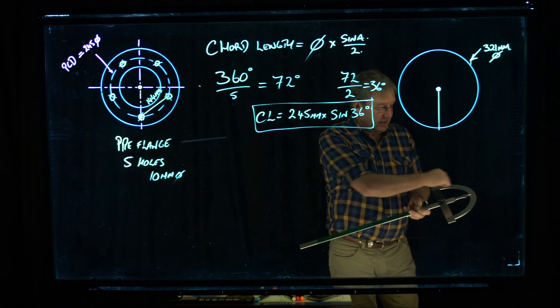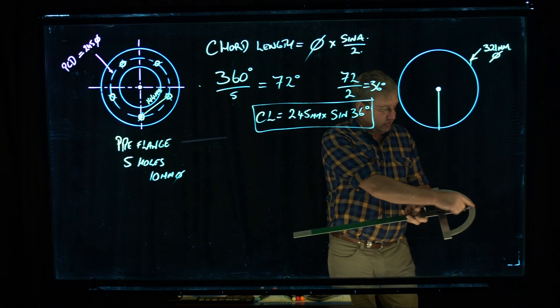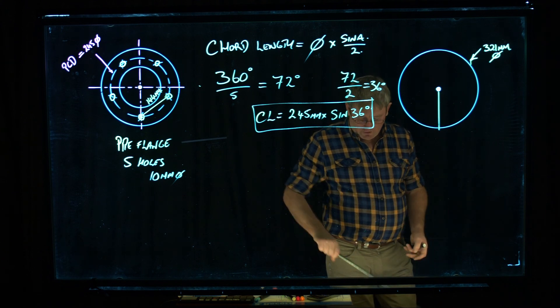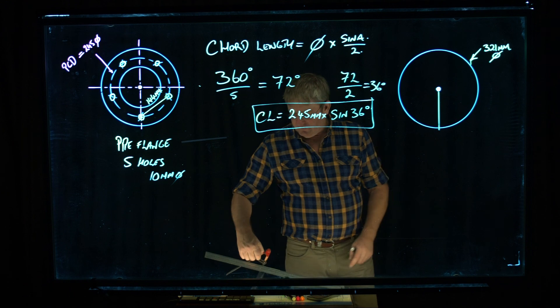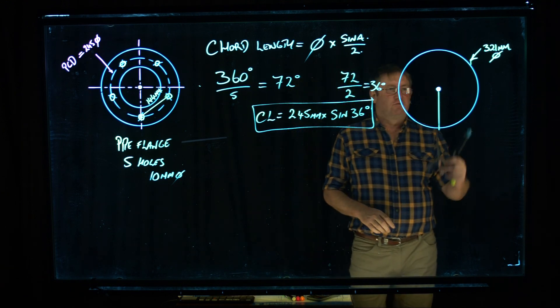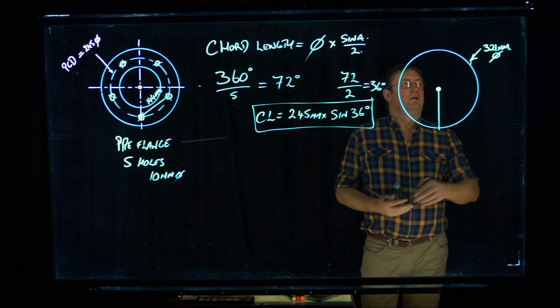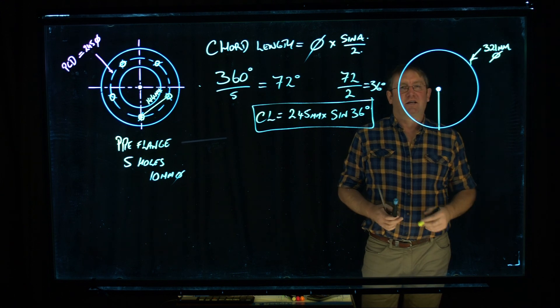So I've got a protractor here, 180 degrees, it's incremented. You haven't got one on the workshop. All you've got to rely on today is a set of dividers. I've drawn my circle here. It's 321mm in diameter.